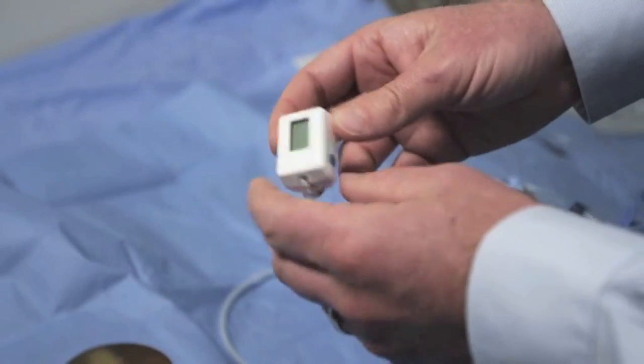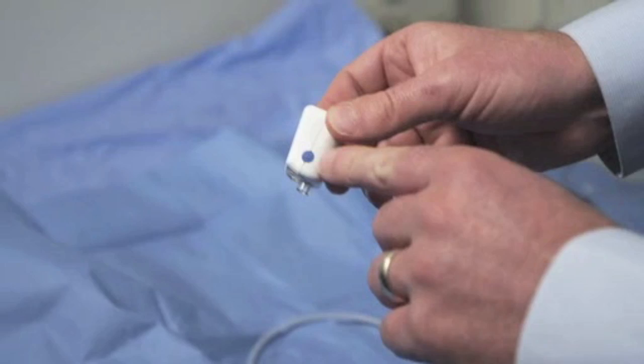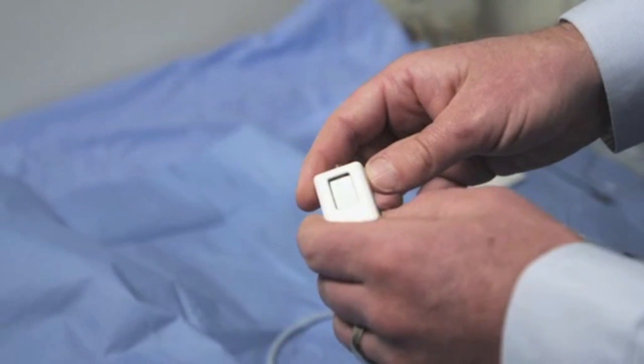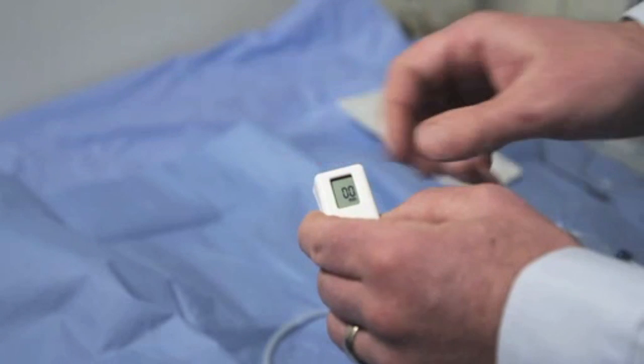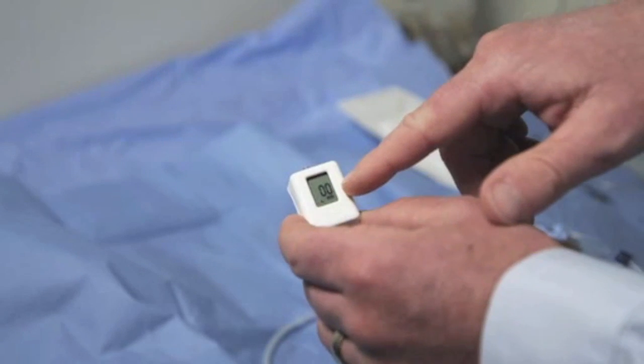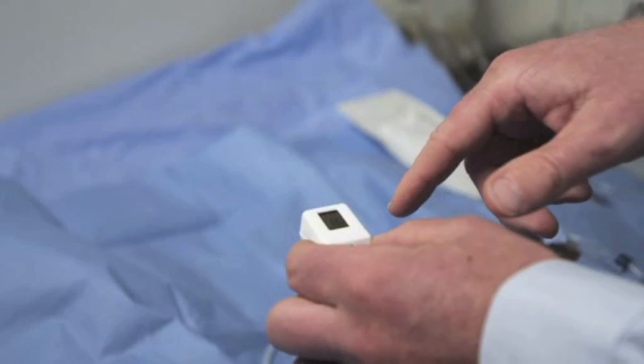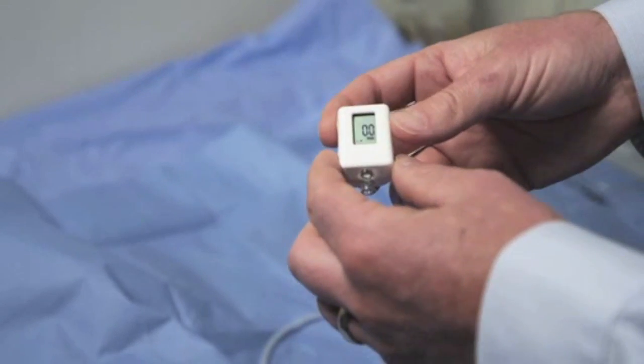The device needs to be turned on and calibrated. This is done by depressing the blue button on the side, and it's important to depress the button until 00 is displayed on the screen, and at this point the device is calibrated to atmospheric pressure.